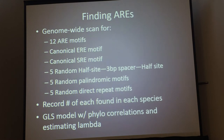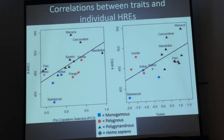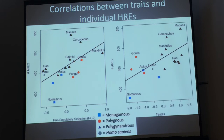What I found is a positive trend for some of these motifs. For pre-copulatory selection — a combination of two tooth size measures and body size — as we go from left to right on the x-axis, we are increasing in dimorphism, and as we go from bottom to top on the y-axis, we are increasing the raw count of response elements found in the genome. We can see a positive relationship there. Looking at the same motif against testes size — relative testes size compared to body size — we can also see a positive correlation.